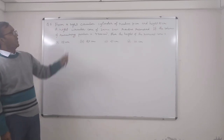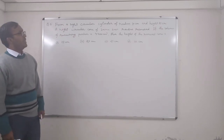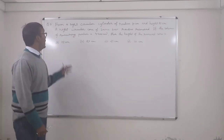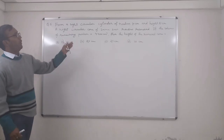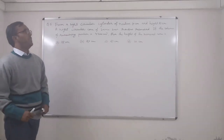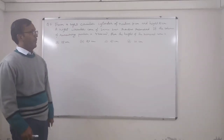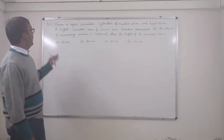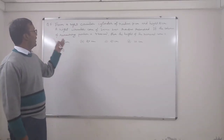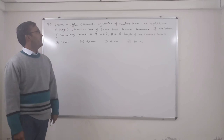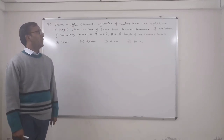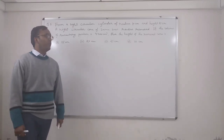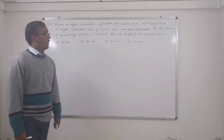From a right circular cylinder of radius 10 cm and height 21 cm, a right circular cone of the same base radius is removed. If the volume of the remaining portion is 4400 cm³, then find the height of the removed cone.